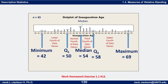Now, how do we find Q1? There are 21 things in the lower half. (21+1)/2 = 11, so the 11th value from the bottom of the lower half is Q1. Counting to the 11th position gives us 50, so Q1 = 50. There are 10 values below it and 10 above it in the lower half, confirming it is the median of the lower half.